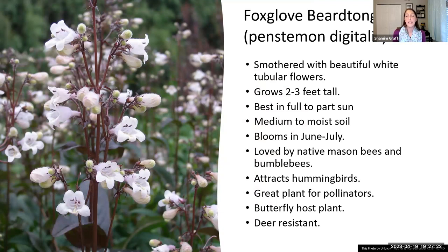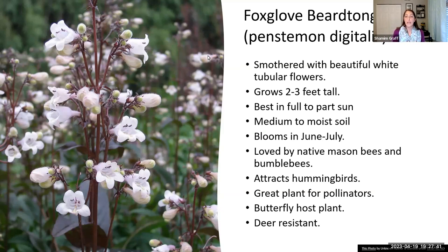This is our native foxglove — you've probably seen cultivars of foxglove over the years. It has beautiful white flowers and is another plant that's not too tall, about two to three feet. It tolerates part sun and a little shade, and of course full sun like many of our prairie plants. It likes a little moisture in the soil, not too dry. It blooms in the middle of summer and is great for attracting native bees, hummingbirds, and other pollinators. It's also a host plant and deer resistant.